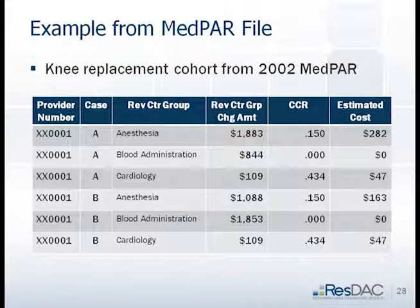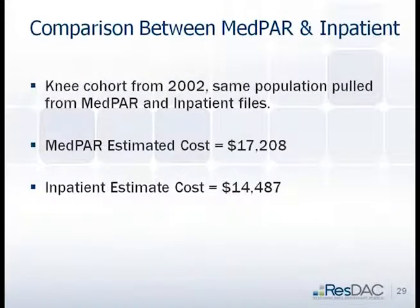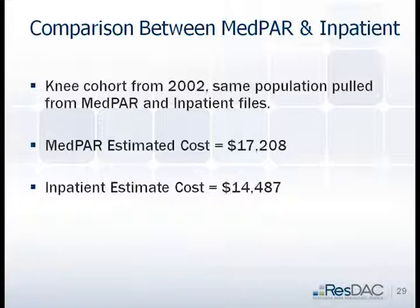Using a 2002 MedPAR example with two cases looking at anesthesia, blood, and cardiology: I calculated cost using the cost groupings from MedPAR and compared to the same cohort in the inpatient file to see how much cost estimates differ depending on which file is used. Without significance testing, there was roughly a $3,000 difference in estimated cost depending on which file was used.